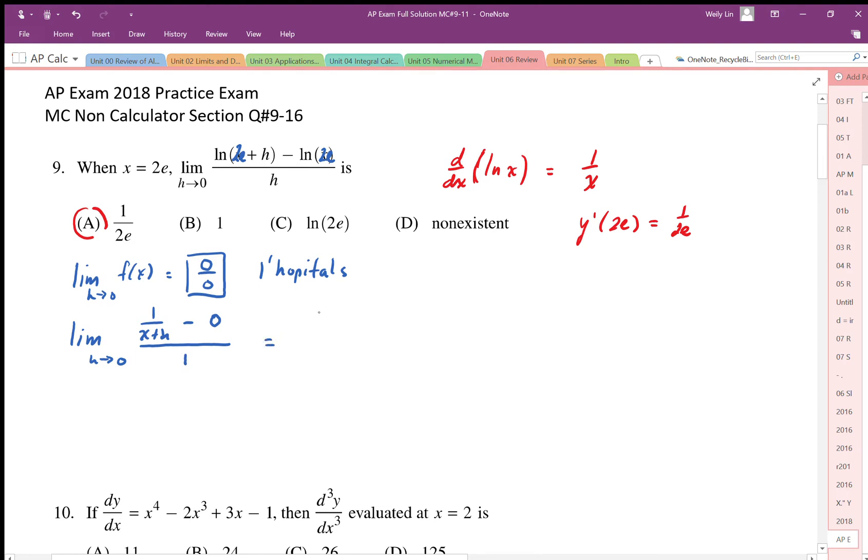As I let h go to 0, I end up with 1 over x. And then substituting x equals 2e, I get the same result. Okay, so the answer still is a.